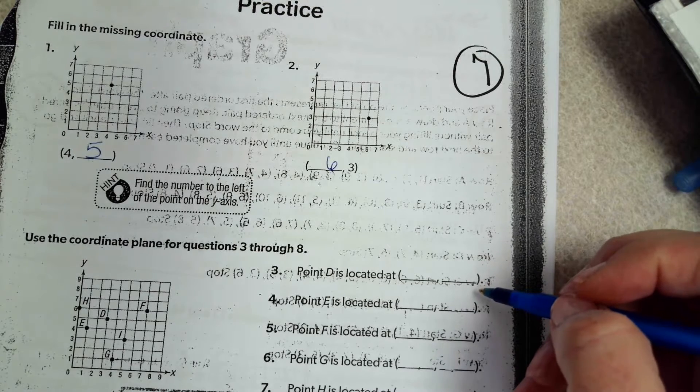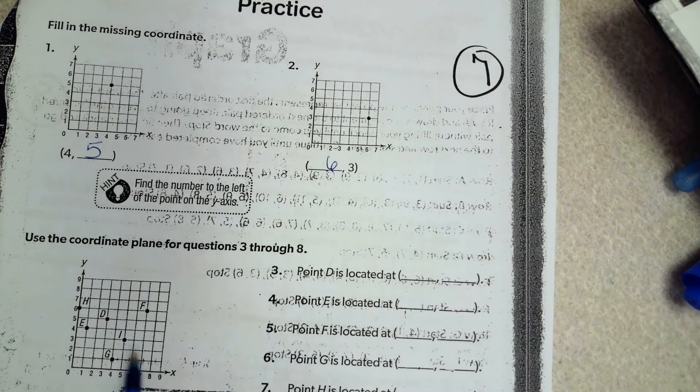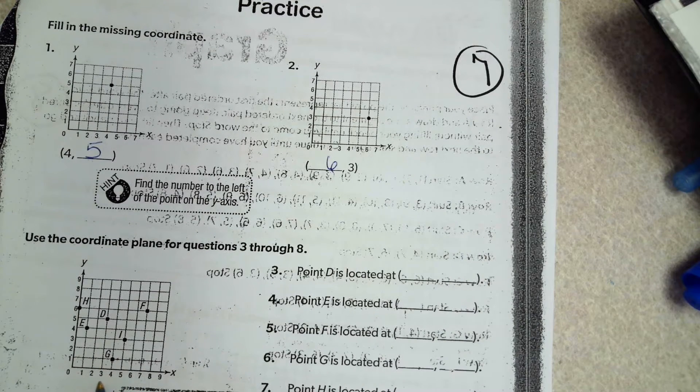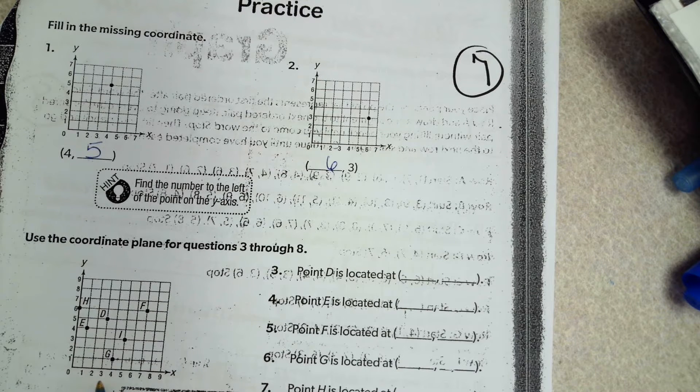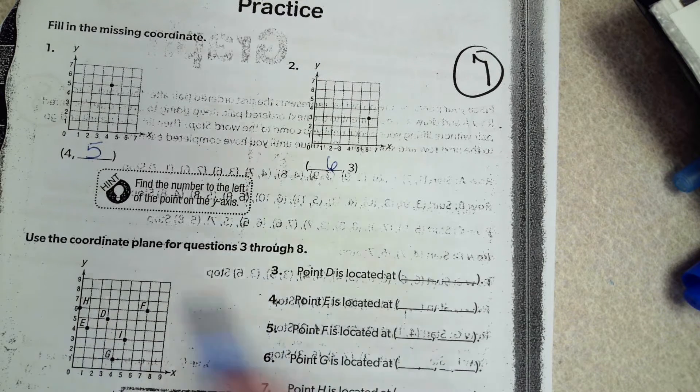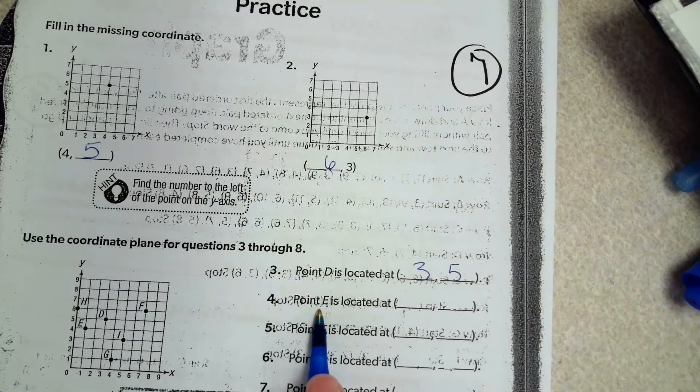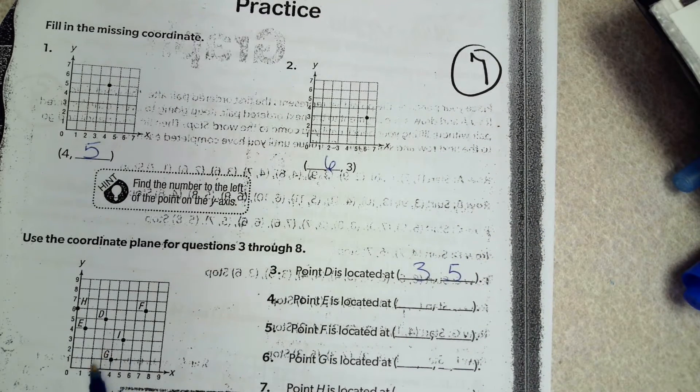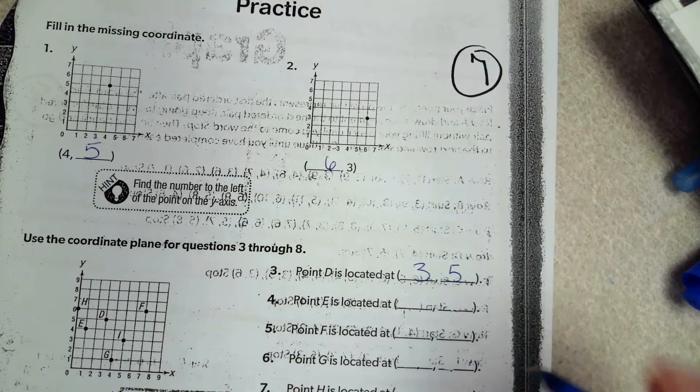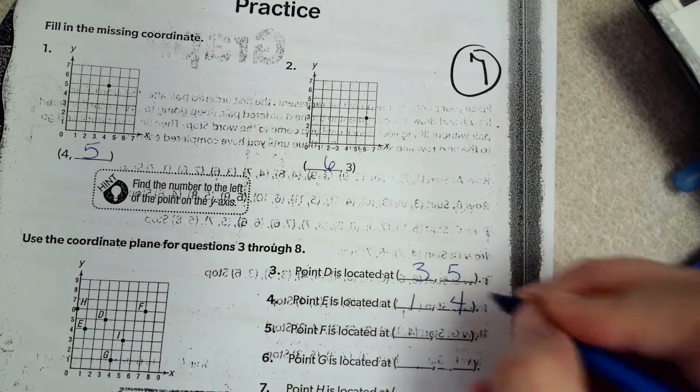Number 3, the location of D. D is over 3, up 5. E. E is over 1, up 4. Number 4.